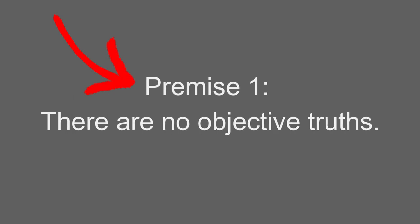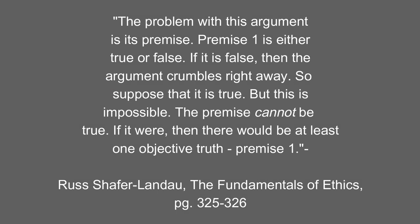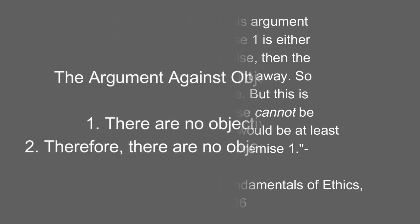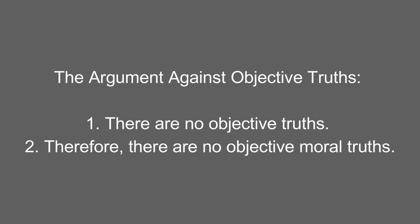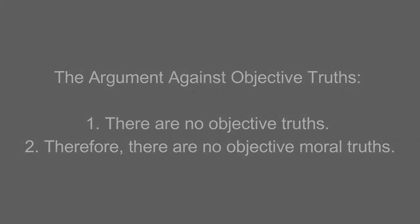The main problem with this argument rests in Premise 1: there are no objective truths. Premise 1 is either true or false. If it is false, then the argument crumbles right away. Suppose that it is true — but this is impossible. The premise cannot be true, because if it were true, then there would be at least one objective truth: Premise 1 itself. Ultimately, this argument fails. No matter how we look at it, this premise is false. Landau concludes that since the premise is false, it follows that there are at least some objective truths out there, and perhaps none of them is a moral one — but this argument is unreliable in supporting such skepticism.